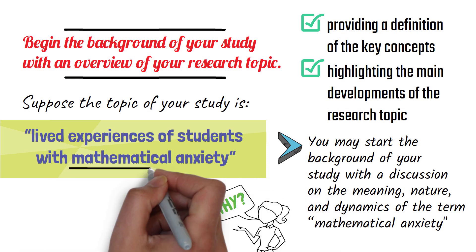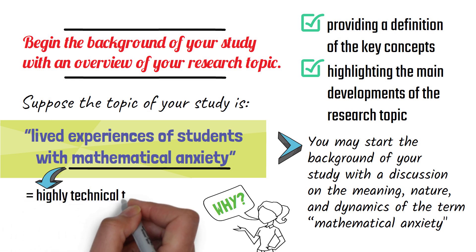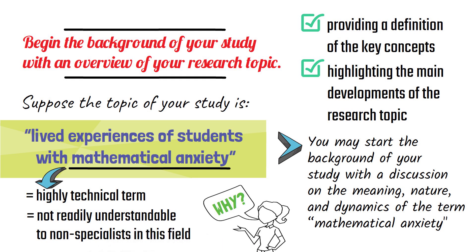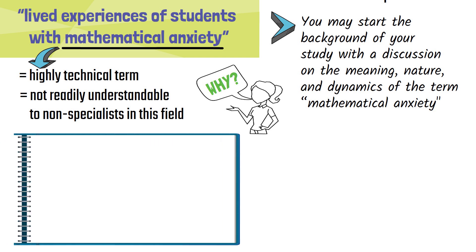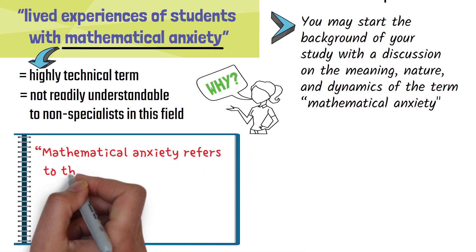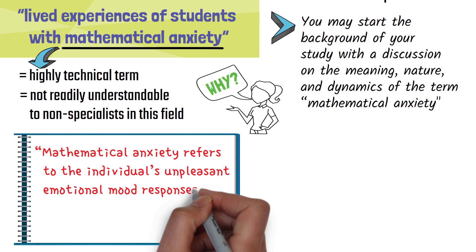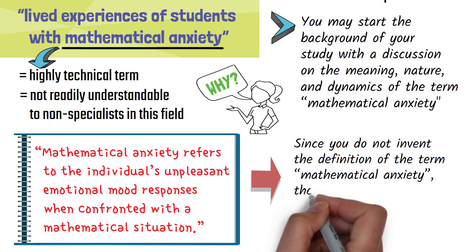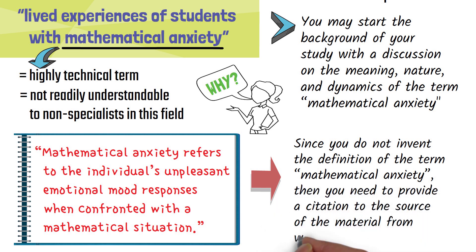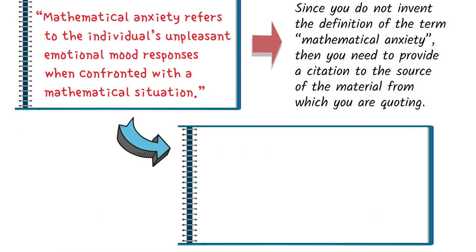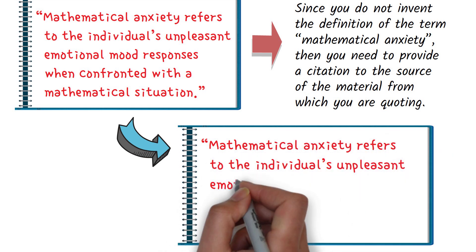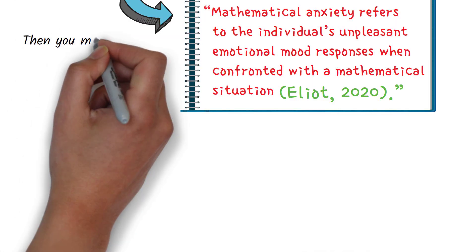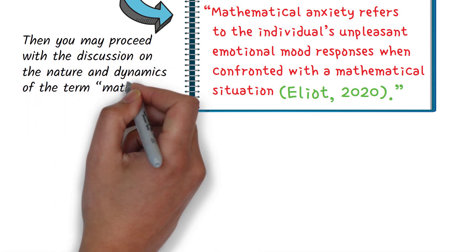The reason for this is too obvious. Mathematical anxiety is a highly technical term that is specific to mathematics. Hence, this term is not readily understandable to non-specialists in this field. So, you may write the opening paragraph of your background of the study with this: 'Mathematical anxiety refers to the individual's unpleasant emotional mood responses when confronted with a mathematical situation.' Since you do not invent the definition of the term, you need to provide a citation to the source — for example, Elliot (2020). You may then proceed with a discussion on the nature and dynamics of the term.